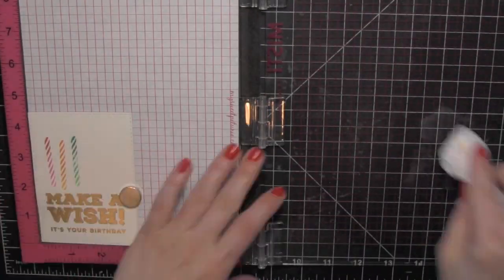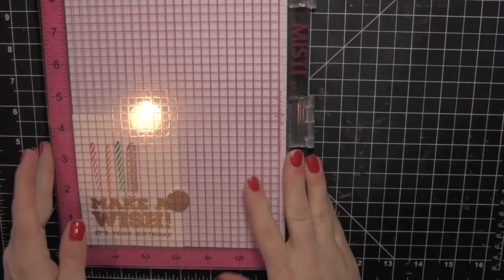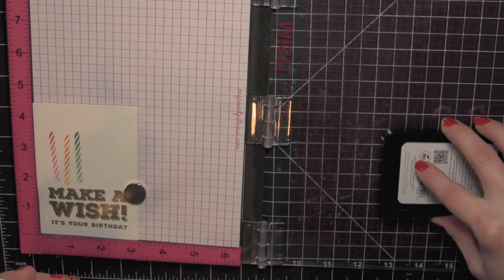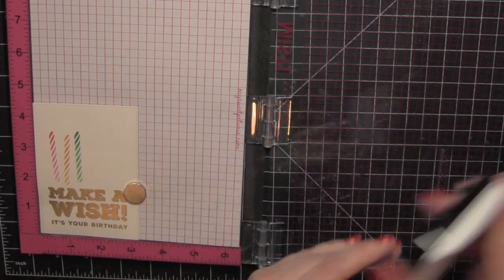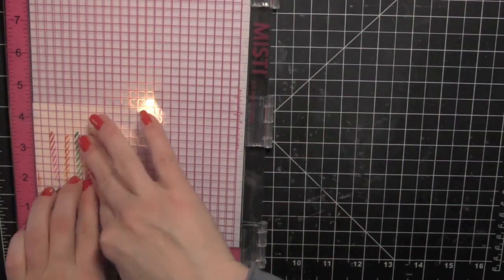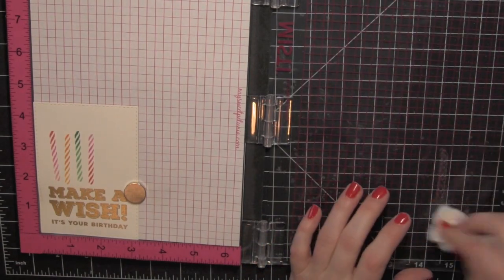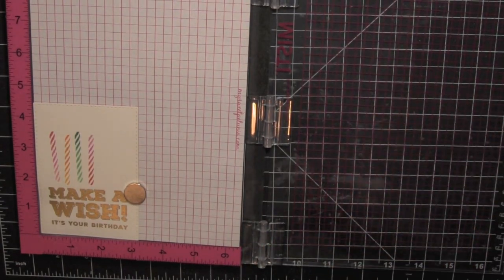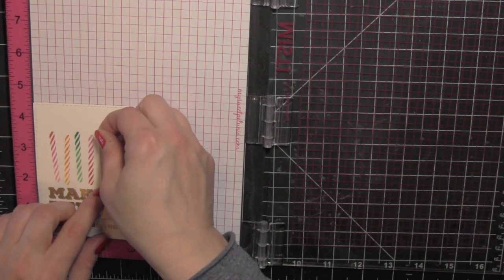The great thing about this stamp tool is when I stamped the candle the first time it had a few little missing areas there. I was able to ink it up again and flip it over and it's still perfectly aligned. I think I kind of missed that in the video, but when I stamped the second mint candle I will show you that because the same thing happened.